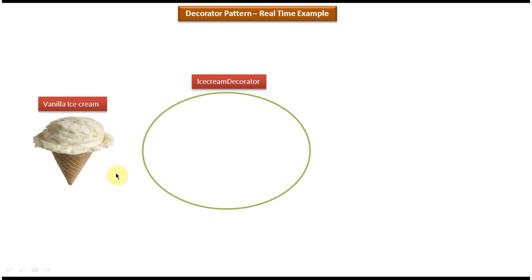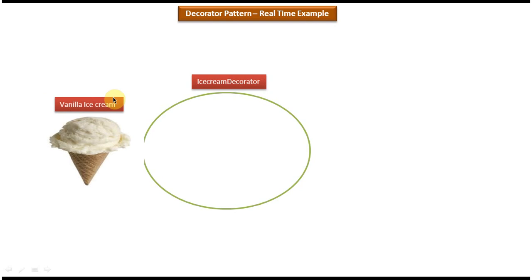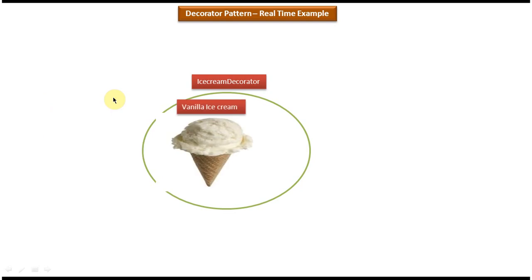Now you will see the real-time example of the Decorator Design Pattern. On the left side you can see a vanilla ice cream. Suppose I want to add nuts or I want to add some chocolate to this vanilla ice cream — I can use an ice cream decorator to do that.